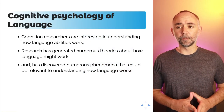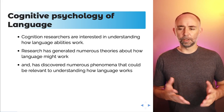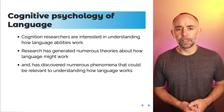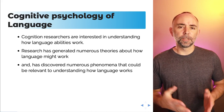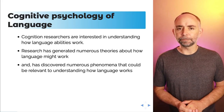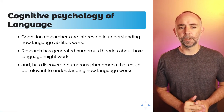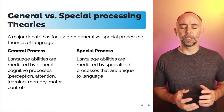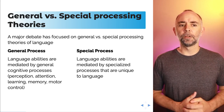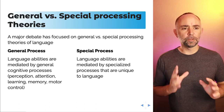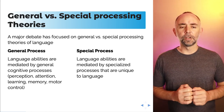What we're going to focus on here is the cognitive psychology of language, which I'll summarize in three ways. First, cognition researchers are interested in understanding how language abilities work. Research over the last 100 years or so has generated numerous theories and discovered numerous phenomena relevant to understanding language. Another major theme is debate around the kinds of processes that support language abilities — specifically a distinction between general process theories of language and special process theories of language. I'll return to this distinction throughout the lecture.